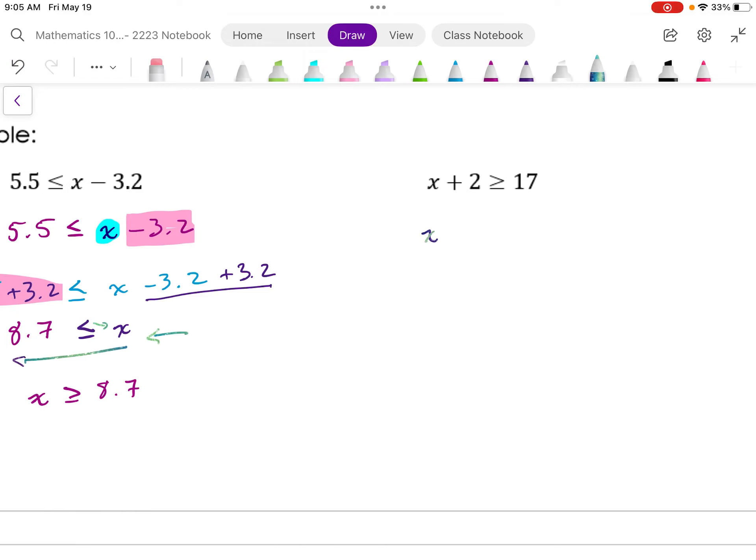Next inequality that I have: I have x plus 2 is greater than or equal to 17. So again, with this inequality, I would like to isolate x. But unfortunately, 2 is being added to x.